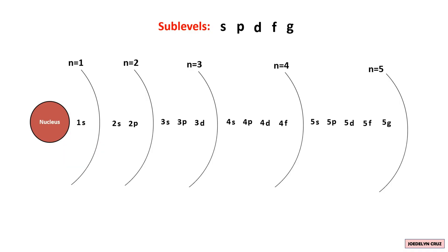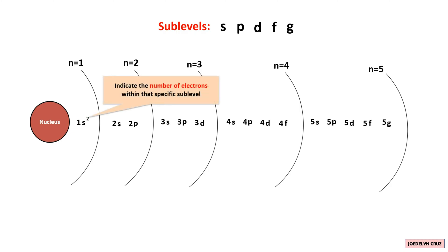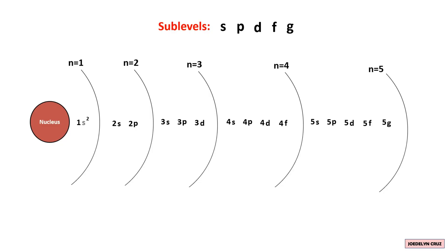Now, let's discuss the superscripts associated with each sublevel. This indicates the number of electrons within that specific sublevel. For instance, in the S sublevel, there are two electrons.